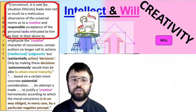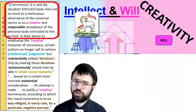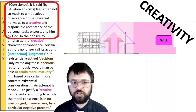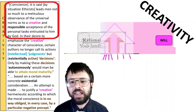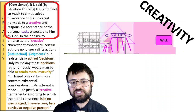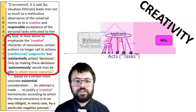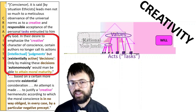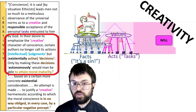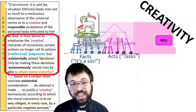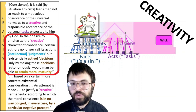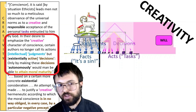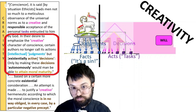John Paul II writes: 'Conscience, it's said by situation ethics, leads men not so much to a meticulous observance of universal norms — so bye-bye intellectual half — as to a creative and responsible acceptance of the personal tasks entrusted to them by God.' In their desire to emphasize the creative character of conscience, certain authors no longer call actions intellectual judgments as we used to, but now just call them decisions. Only by making these decisions autonomously — without any moral norms, values, rules, laws, or anything, totally separate — would man be able to attain moral maturity.